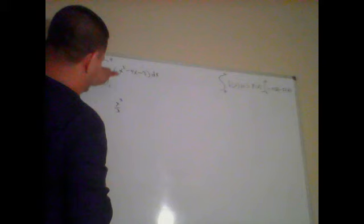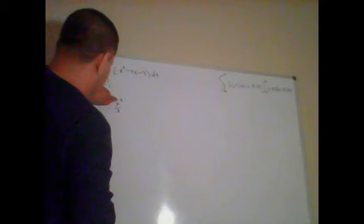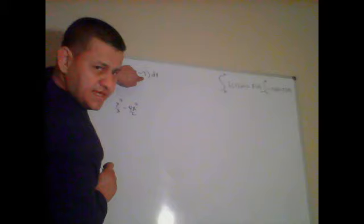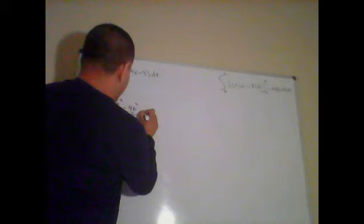I added 1 to the exponent and I divided by a new exponent. So, it's x cubed over 3 minus 4x squared over 2. And over here I've got a negative 3. Negative 3 is to the power of 0. So, I add 1. So, it's going to give me just 3x.